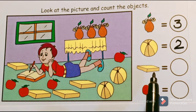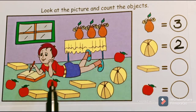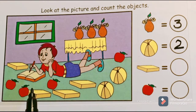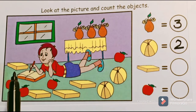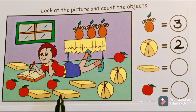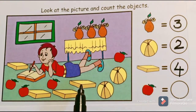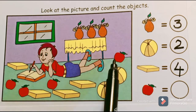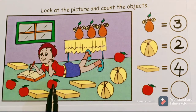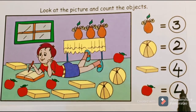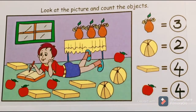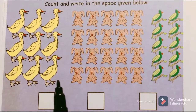Now we have to count the total number of books: one, two, three, four — there are only four books. Now let us find the total number of apples: one, two, three, four — there are only four apples present in this picture.